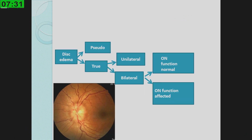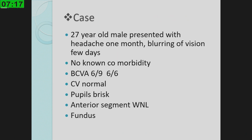Now we have ascertained that this is true disc edema. What do we do next? Look at the other eye — is it unilateral or bilateral disc edema? The next step is to ascertain whether there is an optic neuropathy or not: is the nerve function affected? We will first go on to bilateral disc edema.